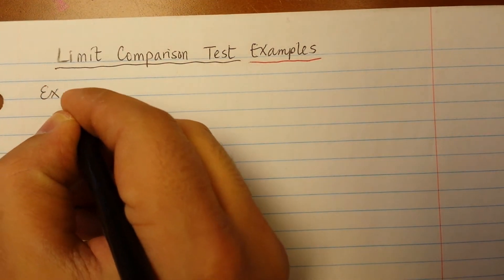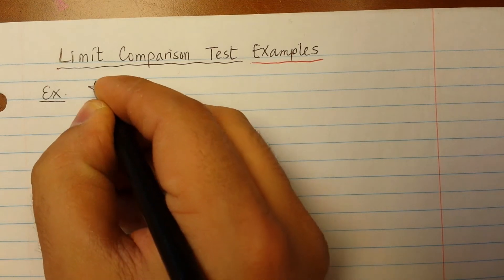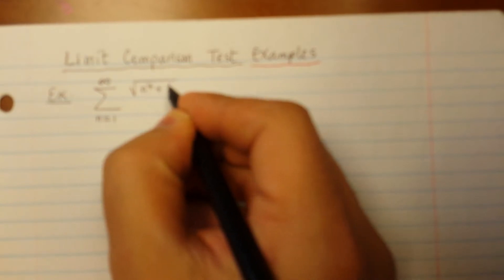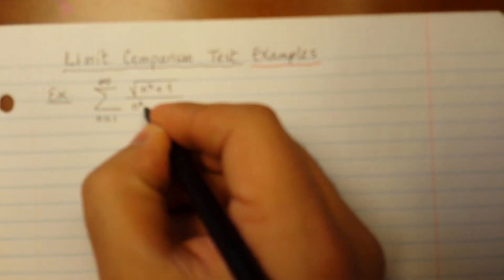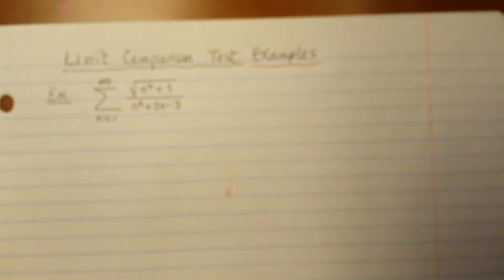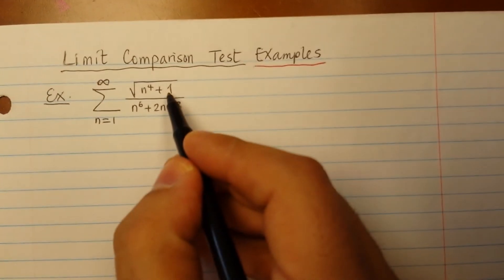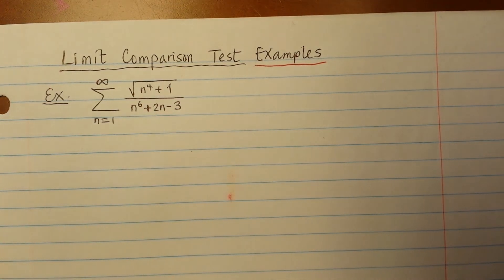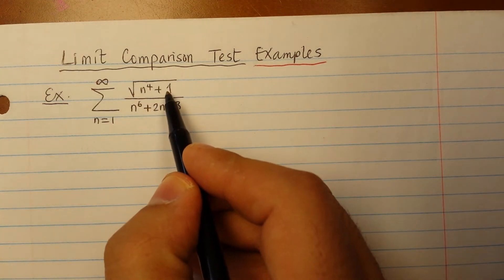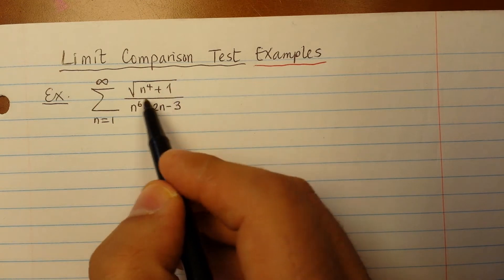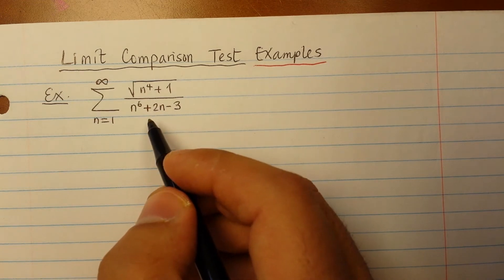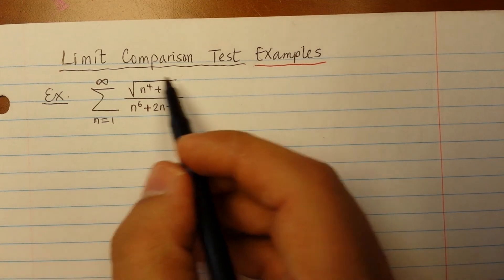The first example is the sum from n=1 to infinity of the square root of n to the 4 plus 1, divided by n to the 6 plus 2n minus 3. We have a plus 1 in the numerator and a minus 3 and plus 2n in the denominator. If you want to use the direct comparison test it may fail, because adding 1 to the numerator makes the fraction larger, but adding 2n minus 3 to the denominator makes it smaller. So for this problem the best choice is the limit comparison test.